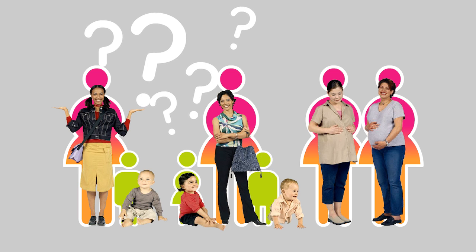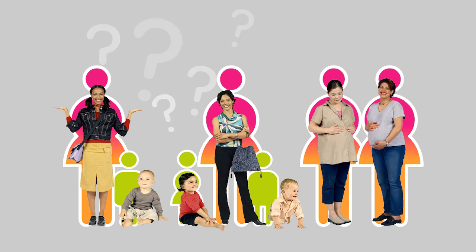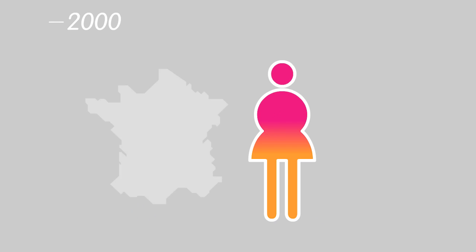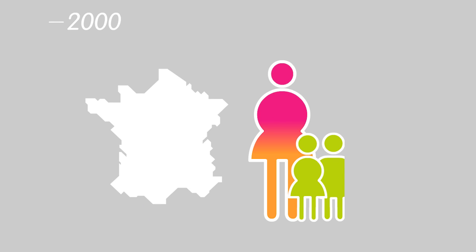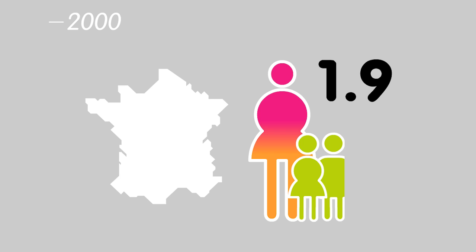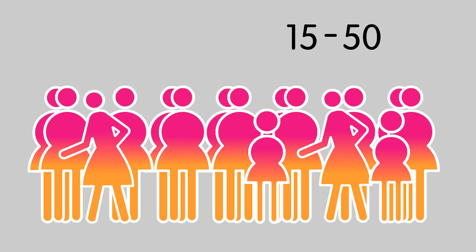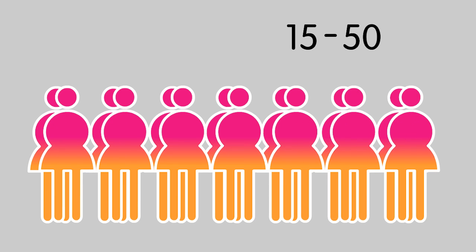Fertility is the average number of children that women have during their lives. For example, in France in 2000, average fertility was 1.9 children per woman. But how do demographers obtain such figures? They are calculated only for the population of women aged 15 to 50, because only those women are of childbearing age.